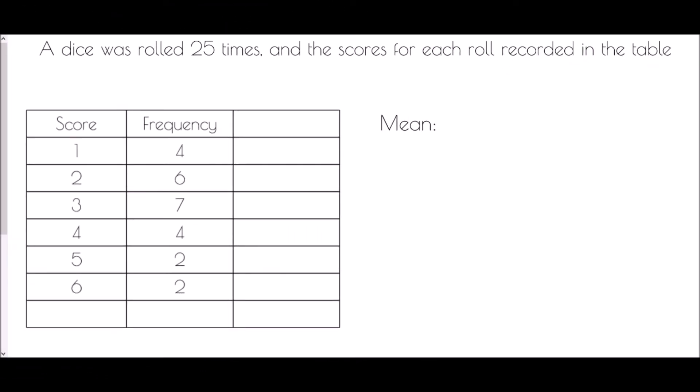For the same data we're looking to find the mean as well. The mean, just like with a list of data, is a little more complicated. It's the total of all the scores divided by how many there were. We need to get that information from the table — so if I score one four times, that would be one plus one plus one plus one, which is four.